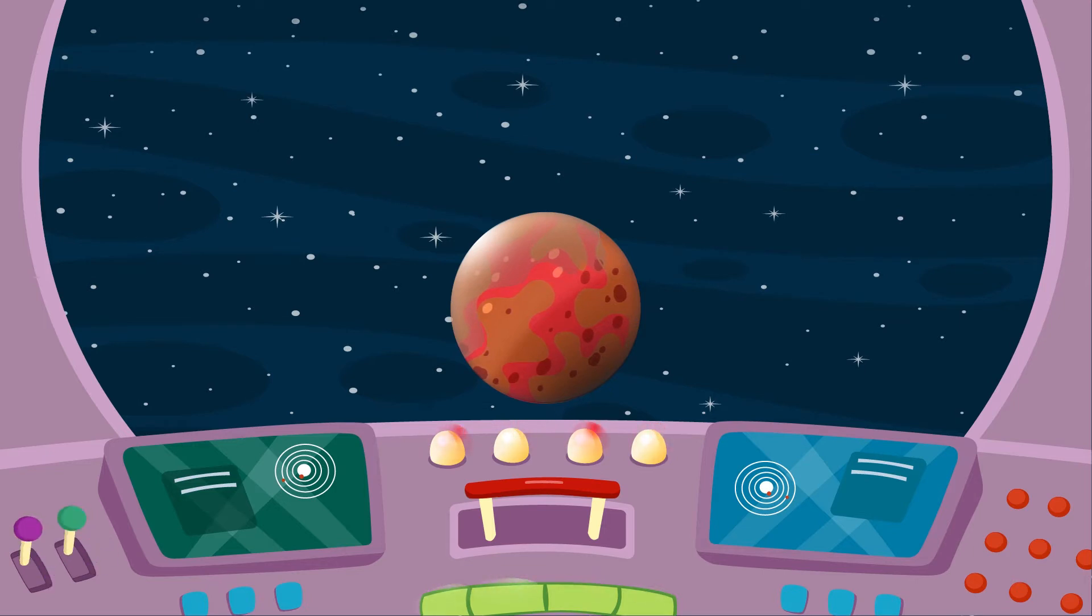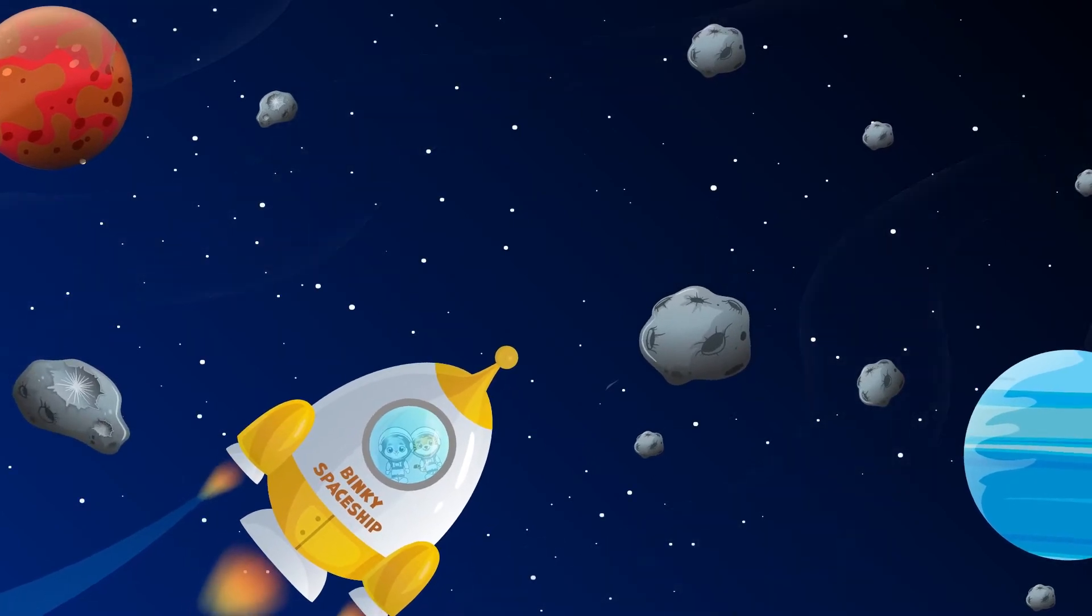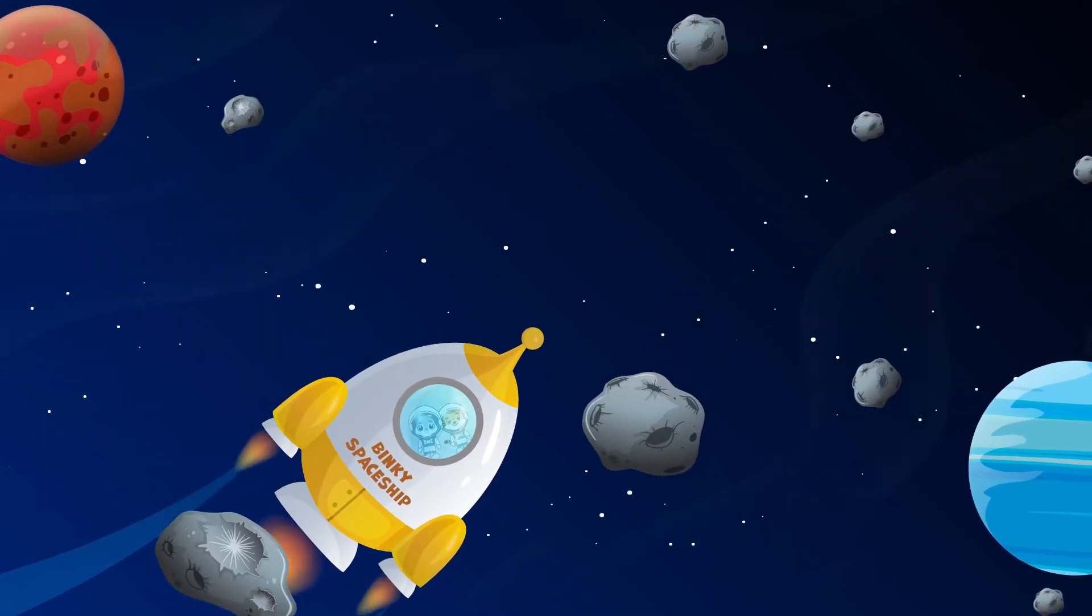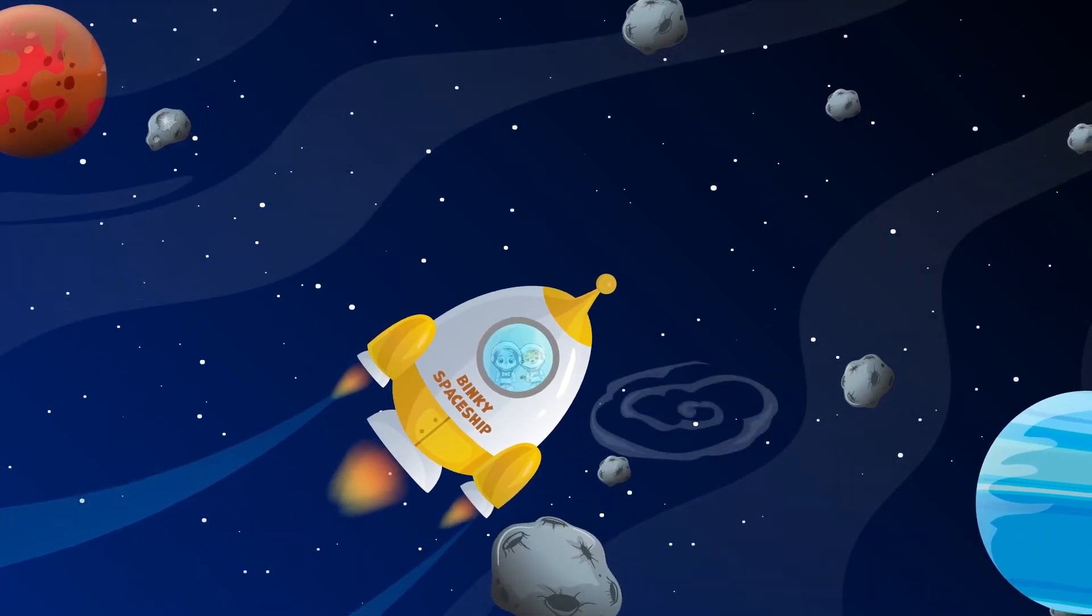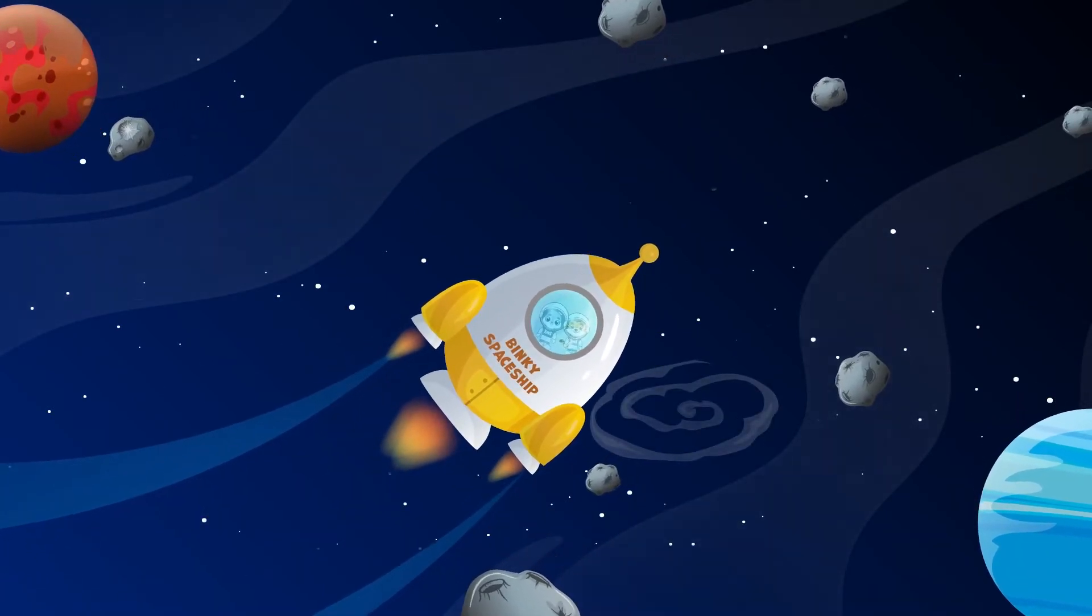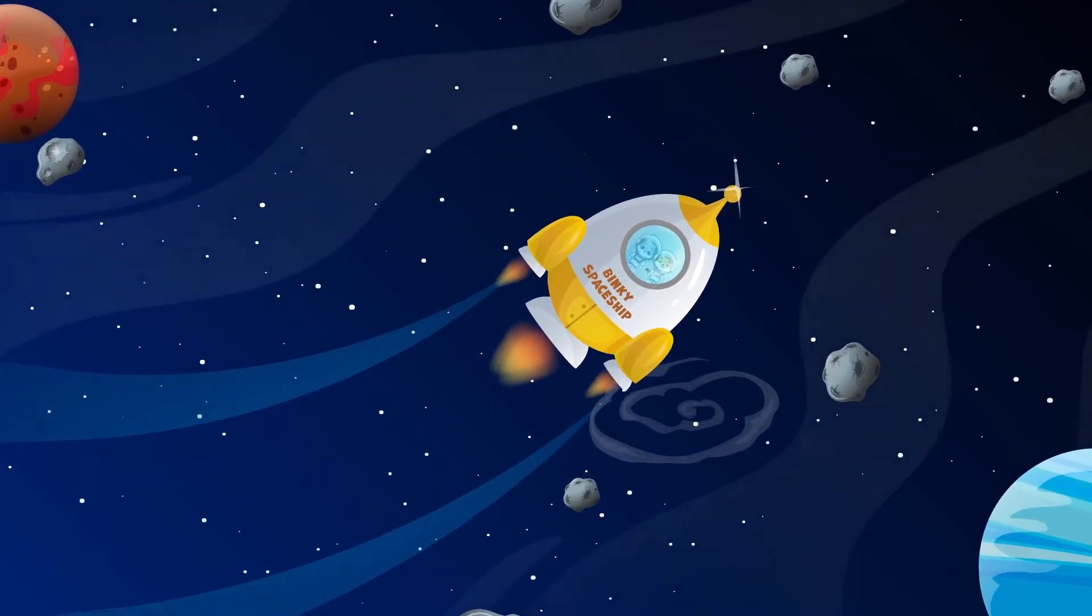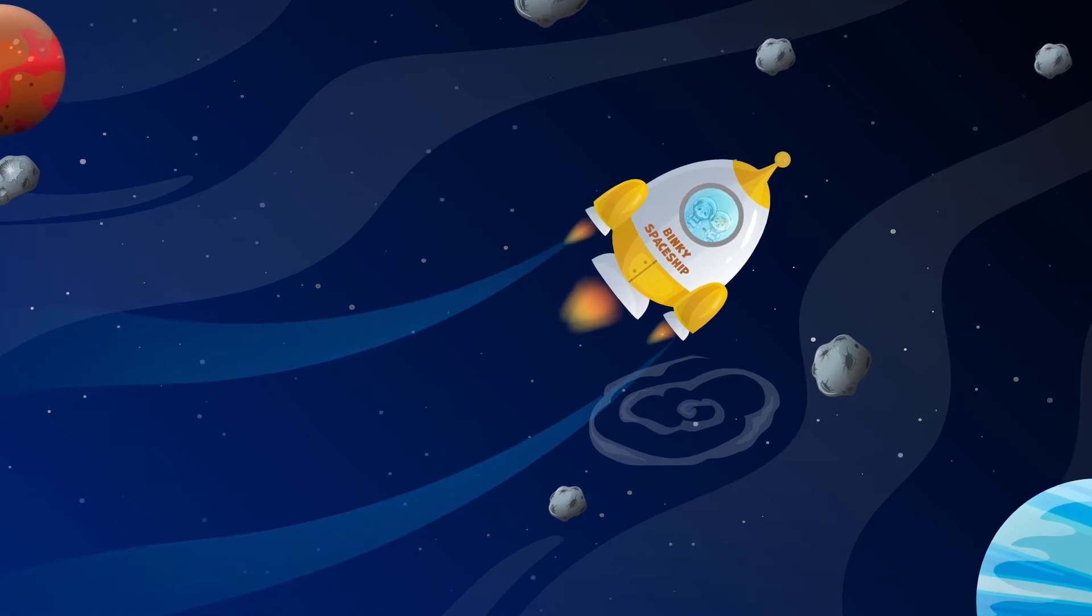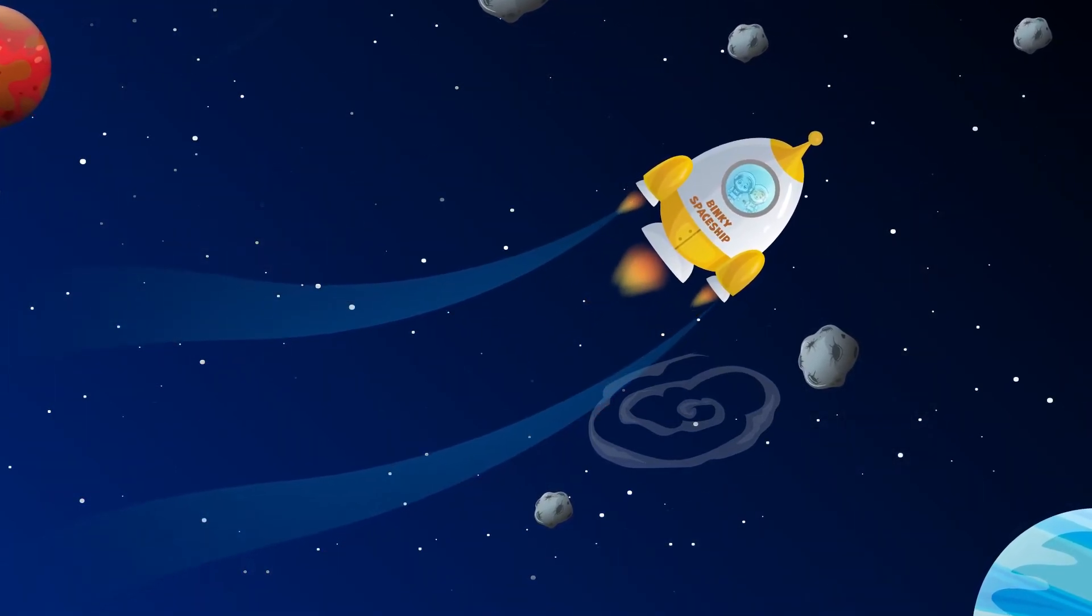On their way to Jupiter, Binky and his friends meet the asteroid belt. The main asteroid belt orbits between Mars and Jupiter and contains millions of asteroids. Most of the asteroids in the main belt are made of rock and stone, but a small portion of them contain iron and nickel metals.